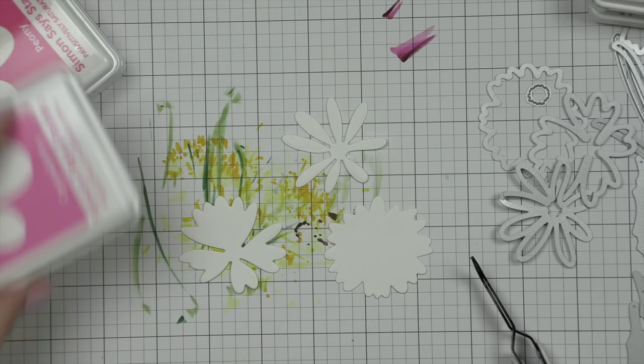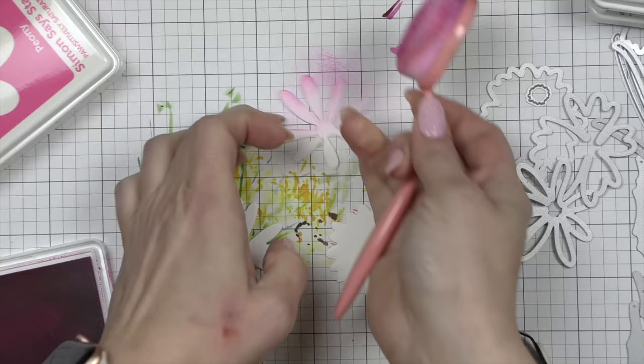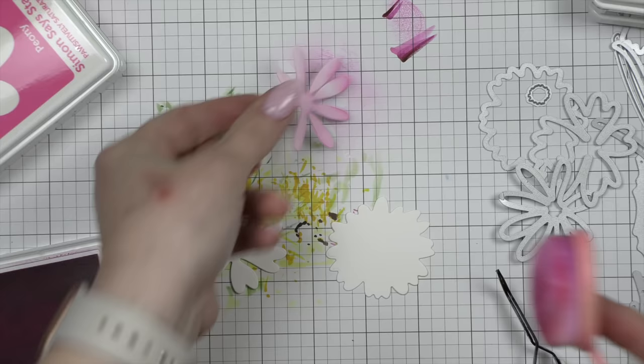This is the African Daisy set. As I mentioned, I'm die-cutting my layers from white cardstock, and I'm going to ink them with a trio of ink from Simon Says Stamp. This is the pink trio, which is going to be Carnation, which you're seeing here, Peony, the mid-tone color, and Rose.